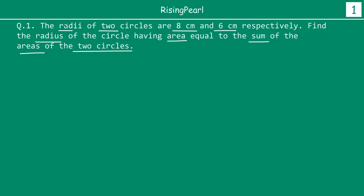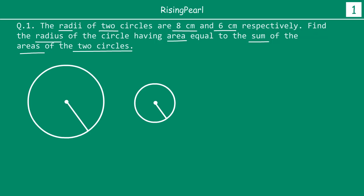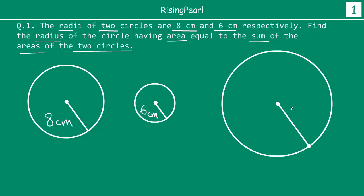The radii — radii means plural form of radius, so when there are more than one radius we call it radii — of two circles. So we are talking about two circles: one is 8 cm and the other one is 6 cm. Now find the radius of a circle — so this is a third circle. So we have two circles given, and we can draw two circles, maybe something like this.